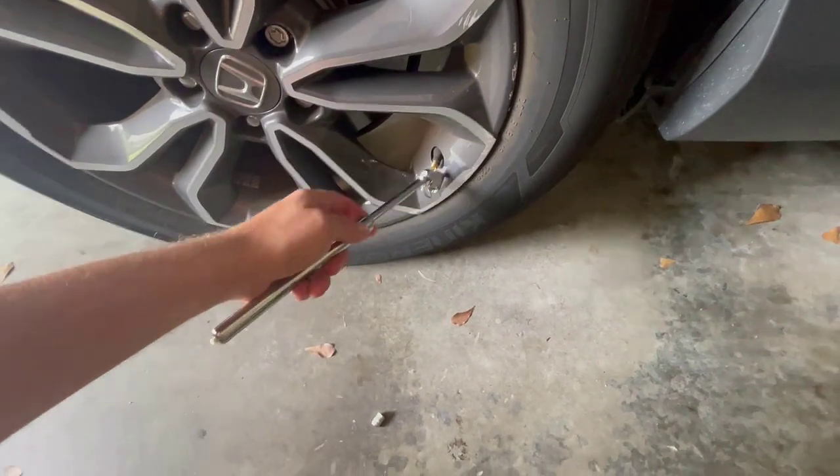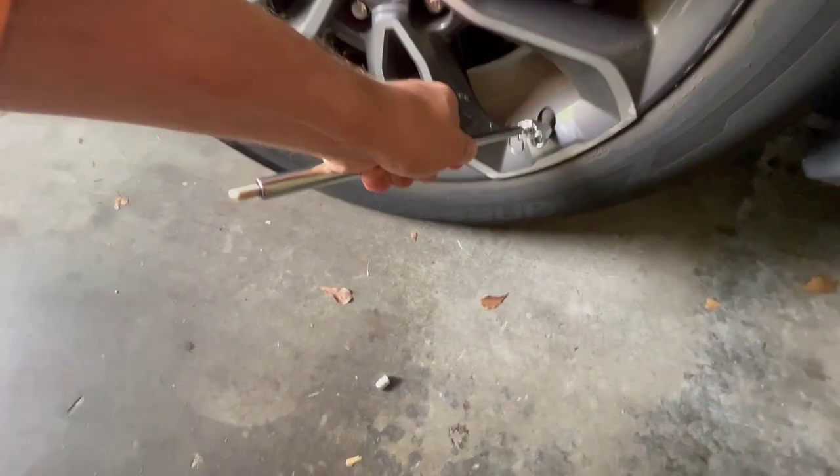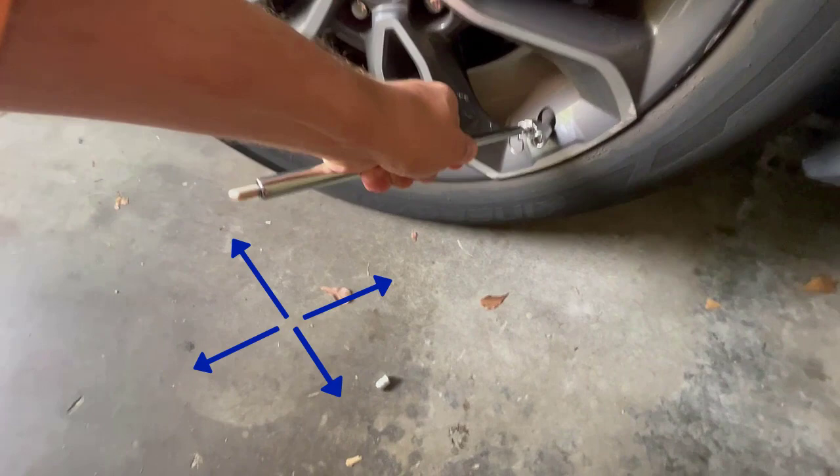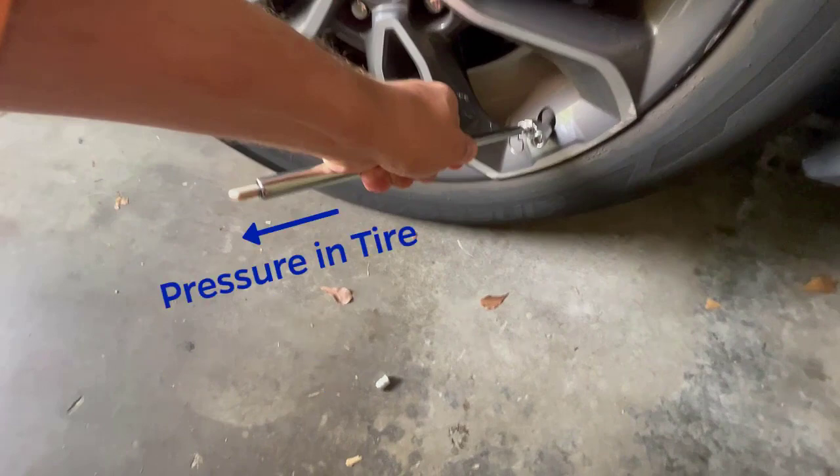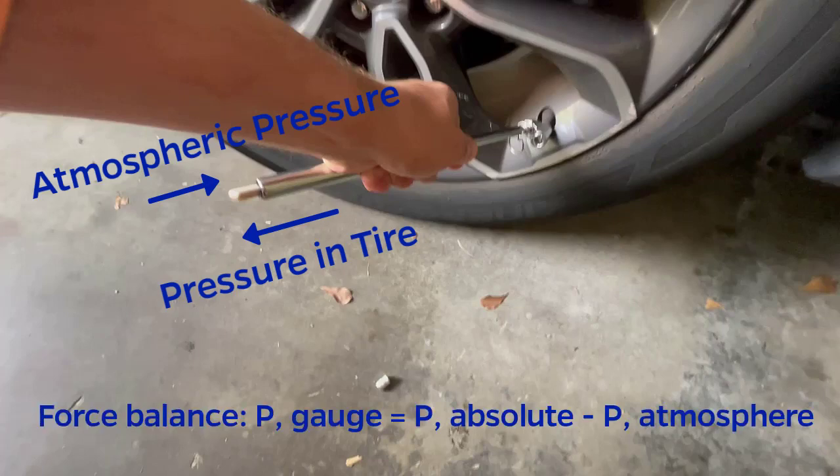Interestingly though, this value is not the true value of the pressure inside the tire. Since the atmosphere is a fluid also, it exerts a pressure in all directions as well. So, while the tire pressure pushes the sliding end outwards, the atmosphere works to push the sliding end inwards.